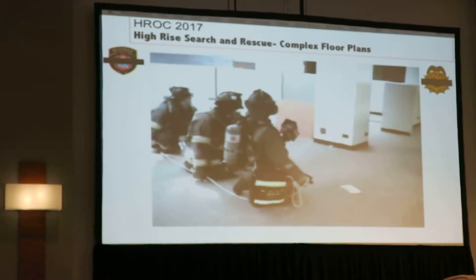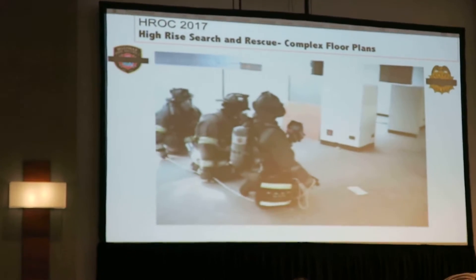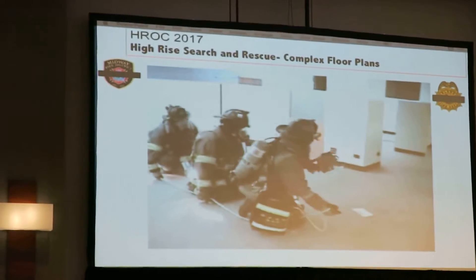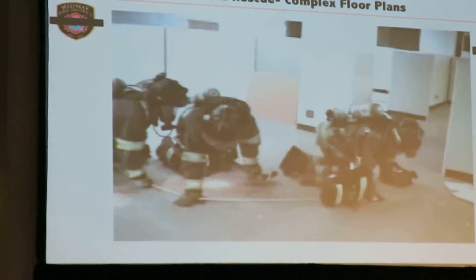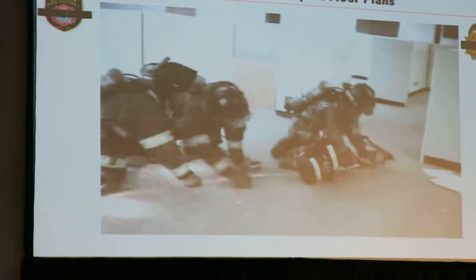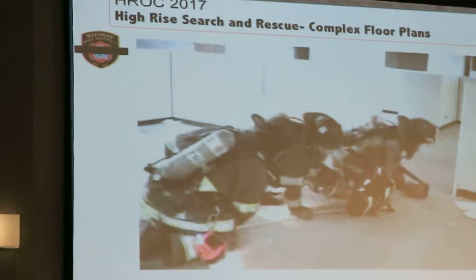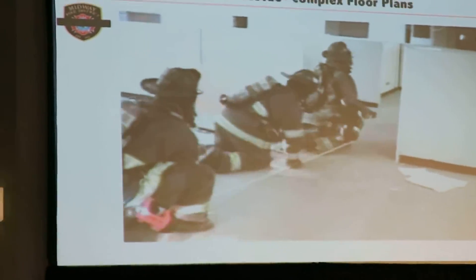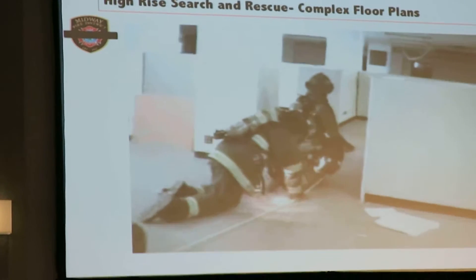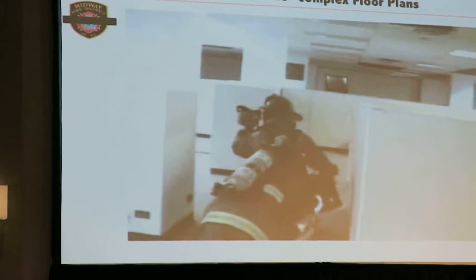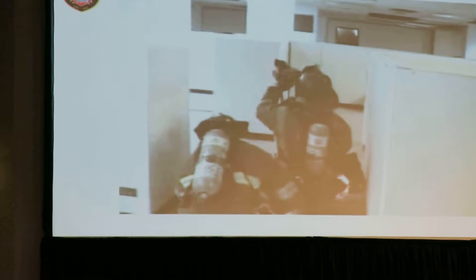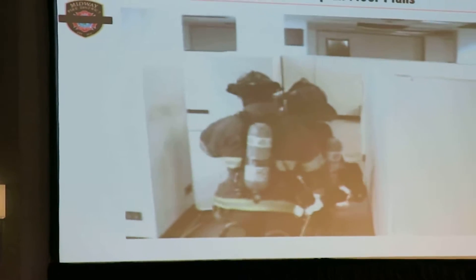You'll see the officer here — you can see how the rope is feeding out of the bag into the right hand of the officer. He manages that, and there are some knots in the rope that will indicate distance. Those knots prompt a roll call or PAR, and they also prompt an air check.